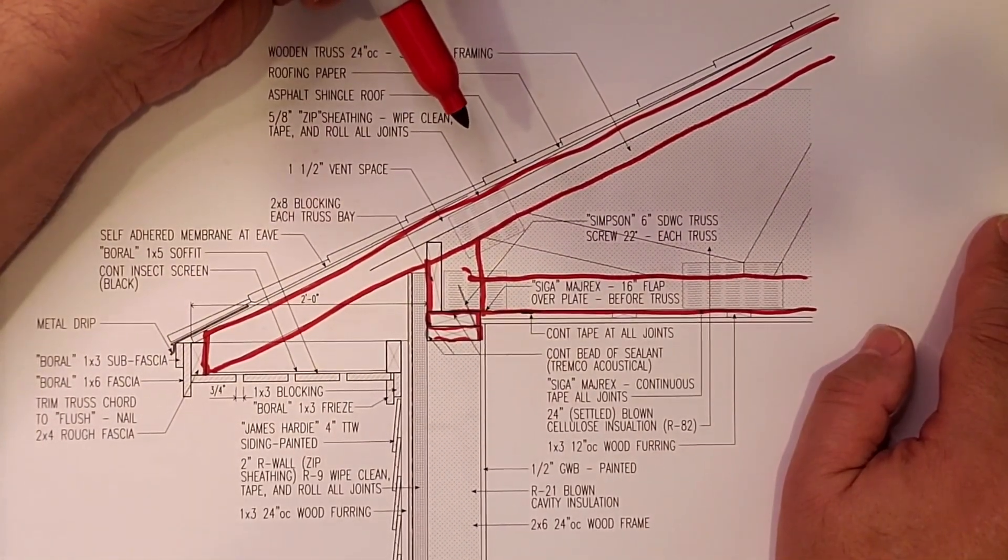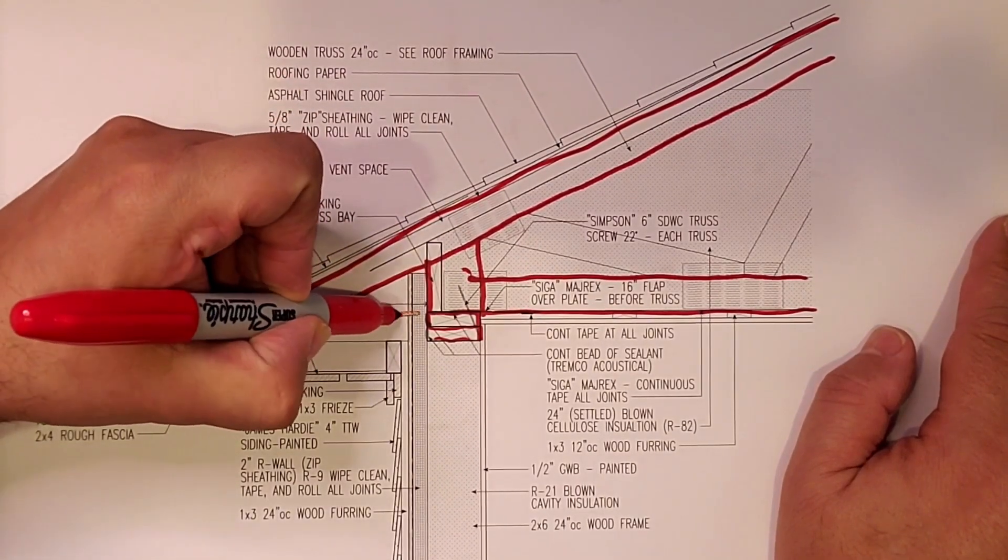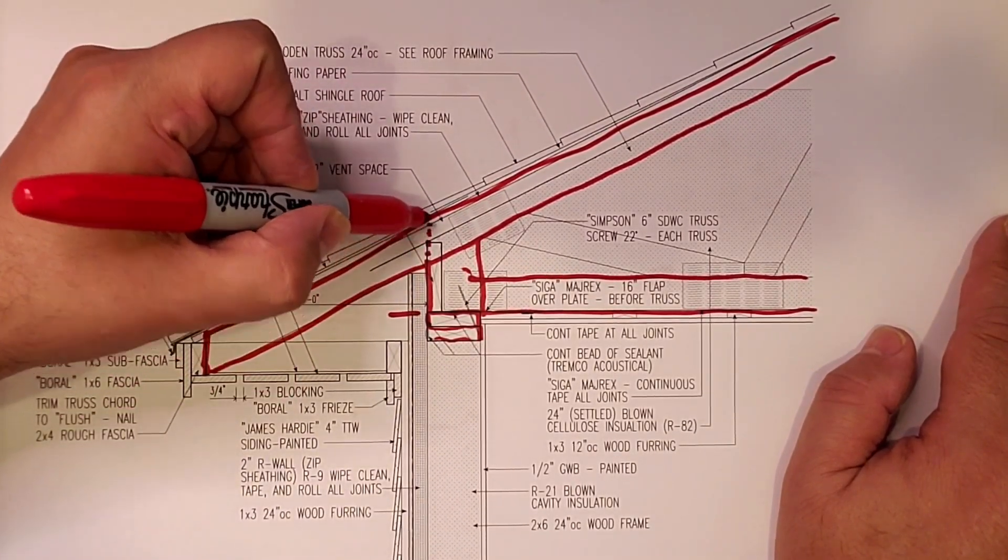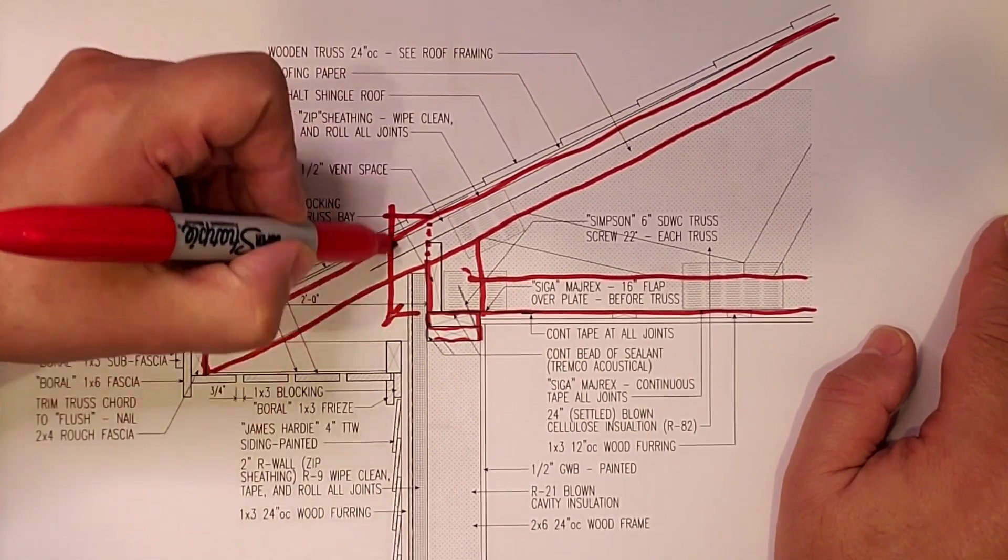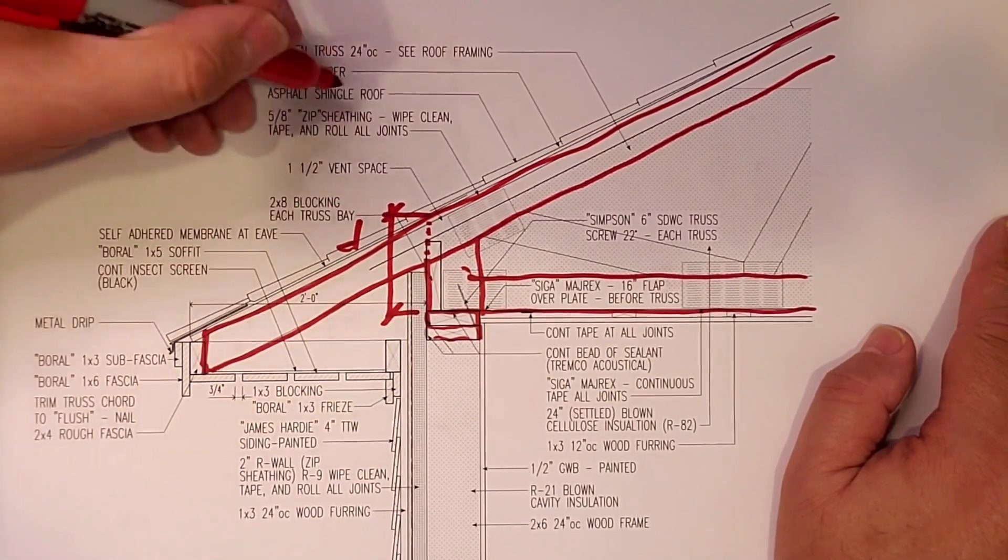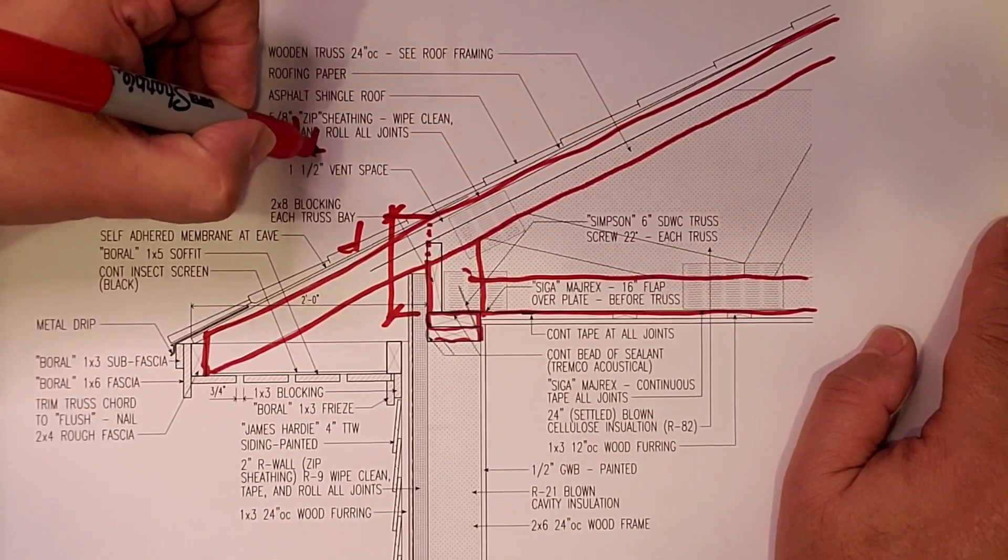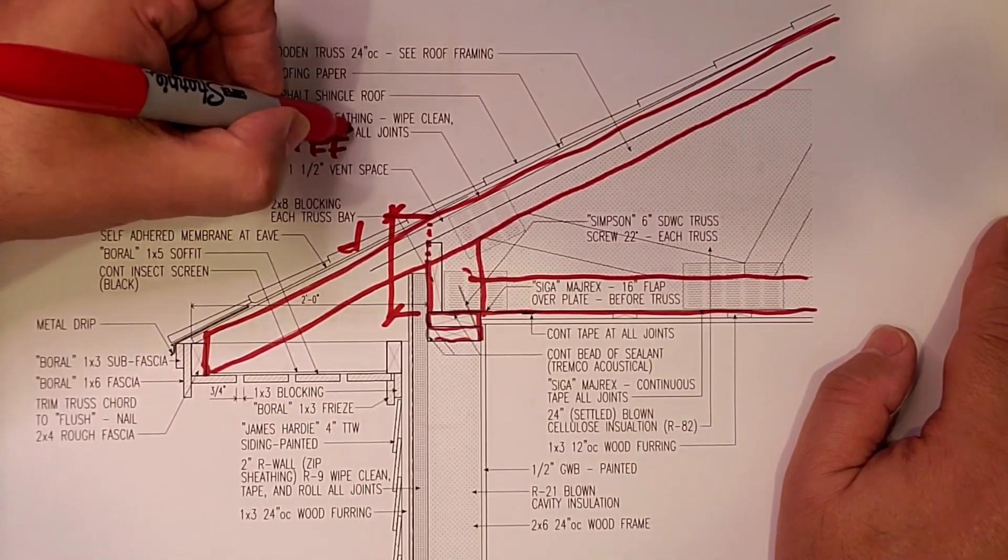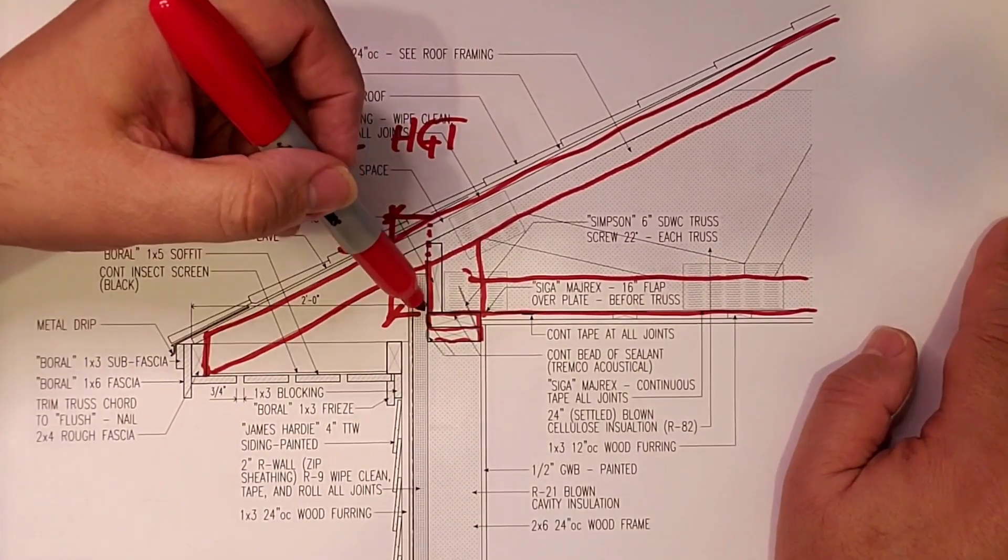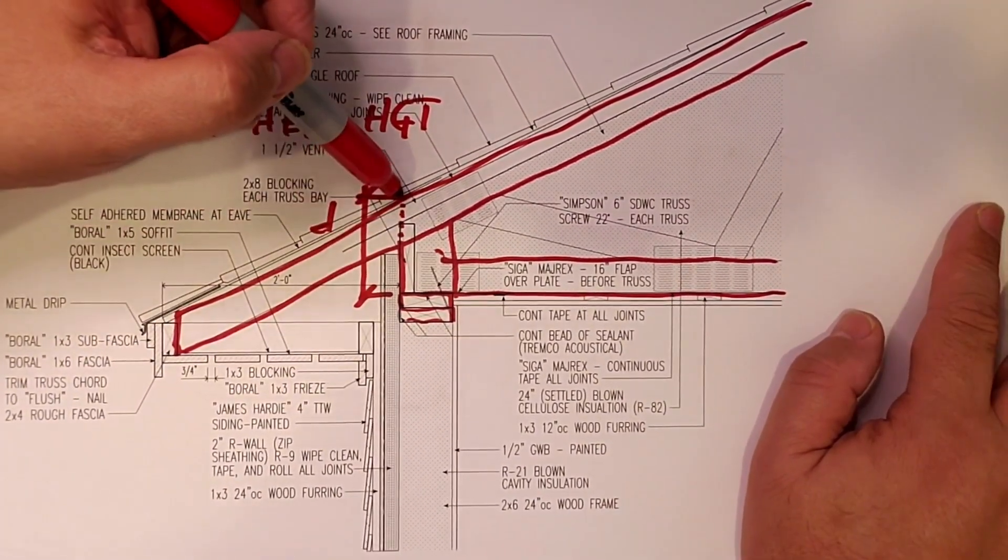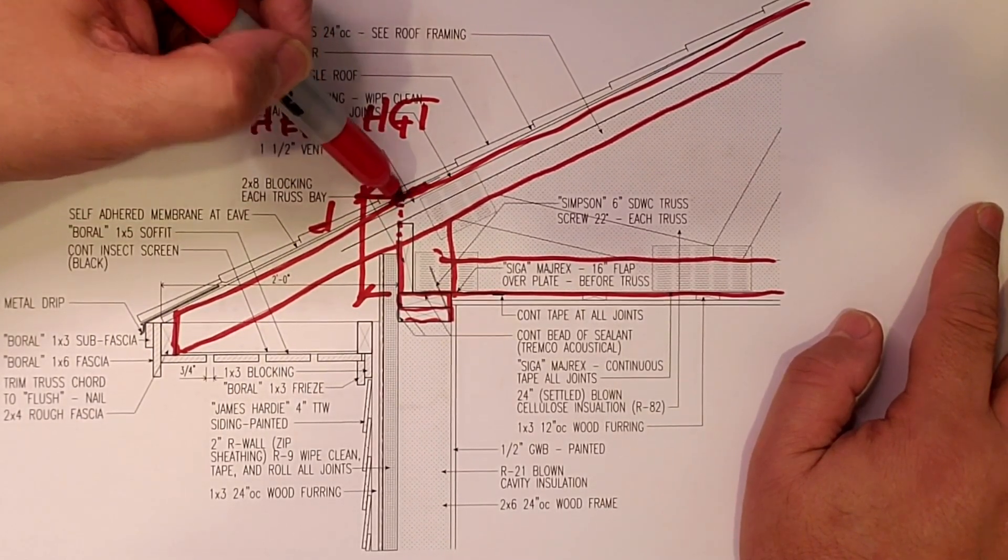There's infill webs to the trusses, but all we really care about is this dimension here. If we extract that all the way up, it touches the top cord. Get that dimension there, we'll just call it D. D equals heel height.